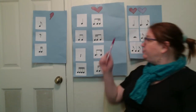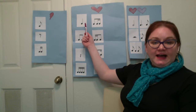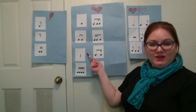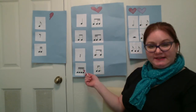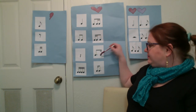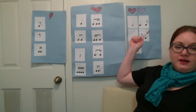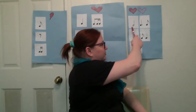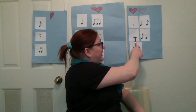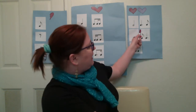Looking first at our one heartbeat rhythm chart, we have ta, ti ti, rest, ticka ticka, ti ticka, ticka ti, timca, and katim. Over here in the two heartbeat column we have tu, half rest, ti ta ti, tom ti, and ti tom.